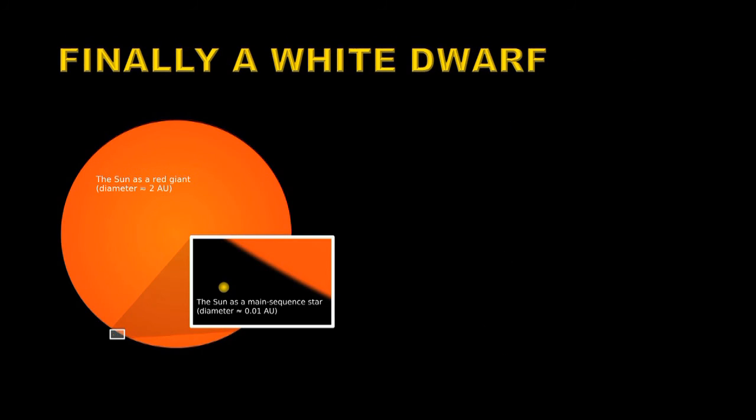So over its lifetime, the sun is going to go through some major changes in size. This little yellow dot here at the bottom left is the sun as we currently know it. When it becomes a red giant, it will grow to be a very large size indeed. Some even say it might go beyond the Earth's orbit.